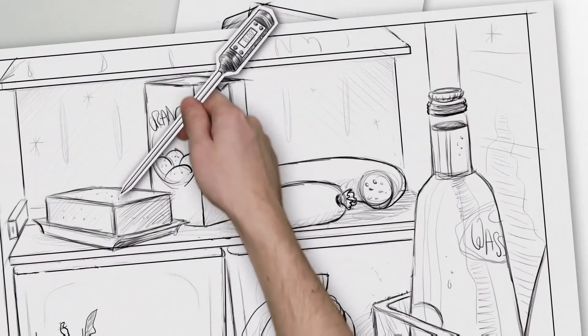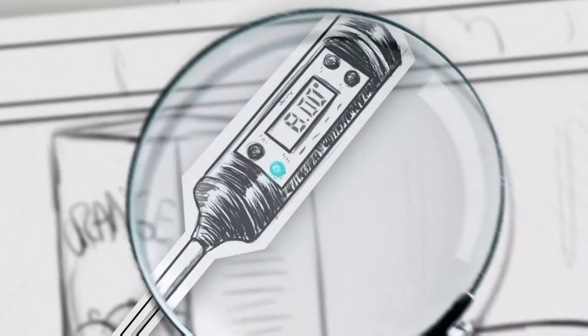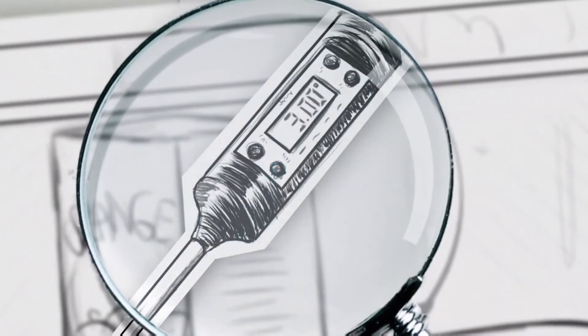A fridge extracts heat from foods and transports the heat to the heat exchanger at the back of the fridge.